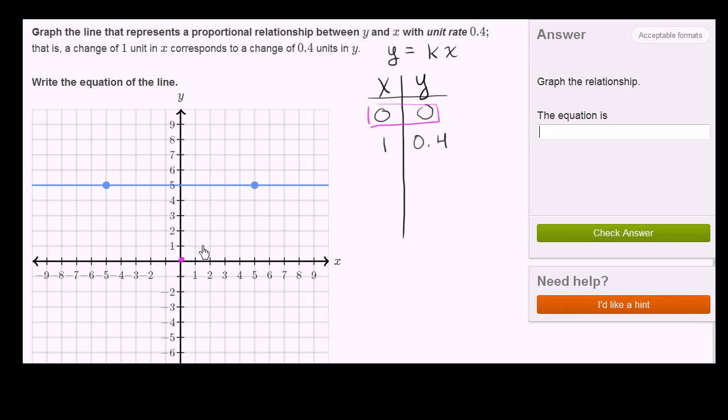It's not so easy to graph this 1 comma 0.4. The 0.4 is hard to graph on this tool right over here. So let's try to get this to be a whole number. So when x increases another one, y is going to increase by 0.4 again. It's going to get to 0.8. When x increases again by 1, then y is going to increase by 0.4 again. It's going to get to 1.2.